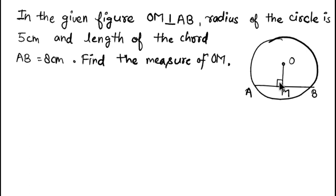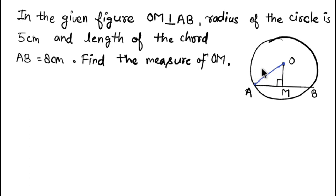We have to find the length of OM. We are given that OM is perpendicular to chord AB and the radius of the circle is 5 centimeters. I'll draw the radius — the line from the center O to the circumference — which is given as 5 centimeters. The length of chord AB is 8 centimeters.